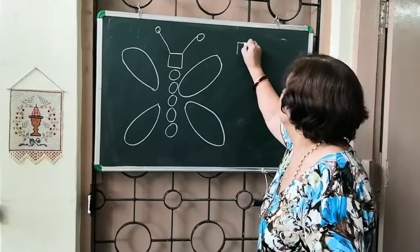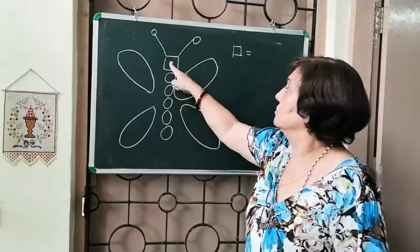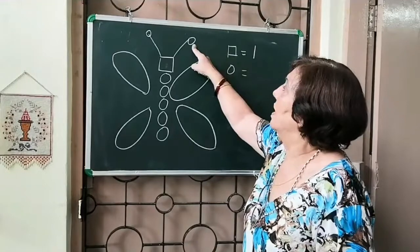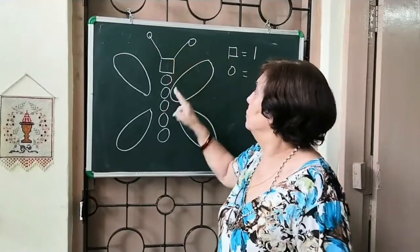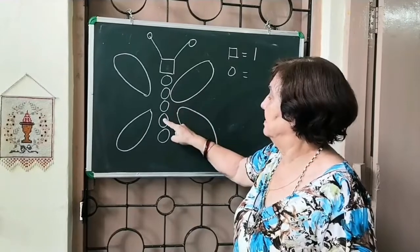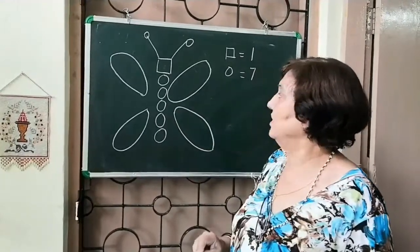Now, you are going to tell me how many squares are there. There is just one square. How many circles are there? One, two, three, four, five, six, seven.